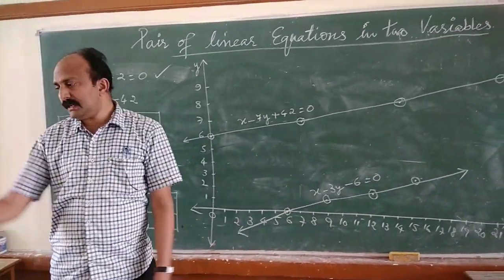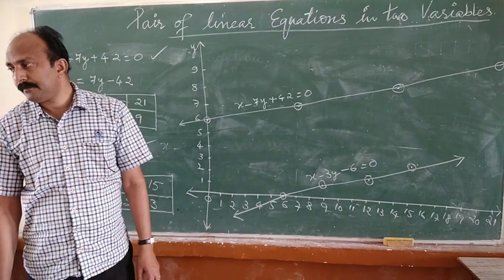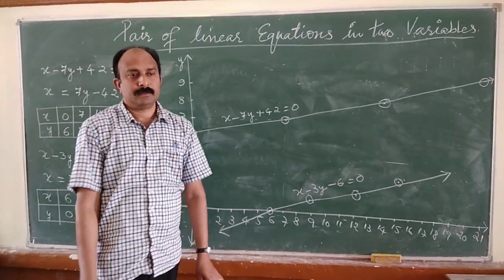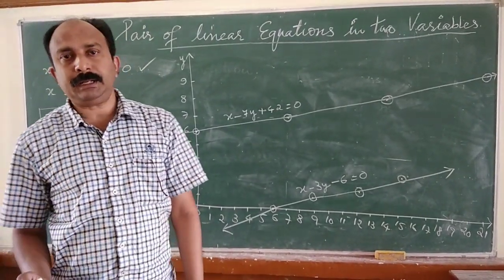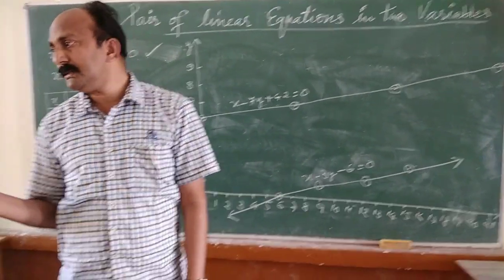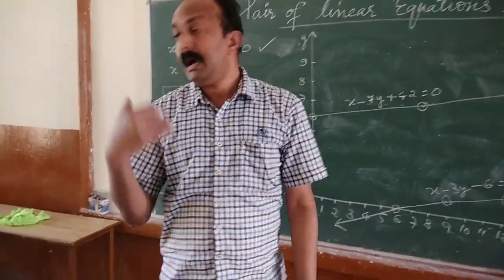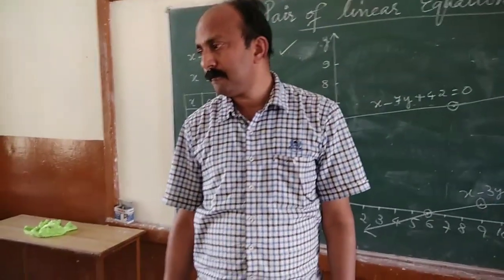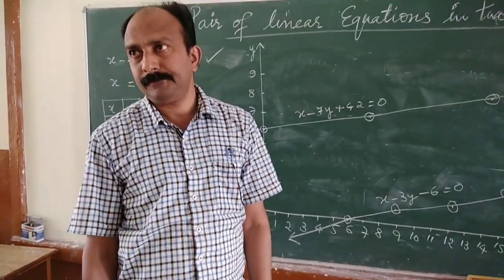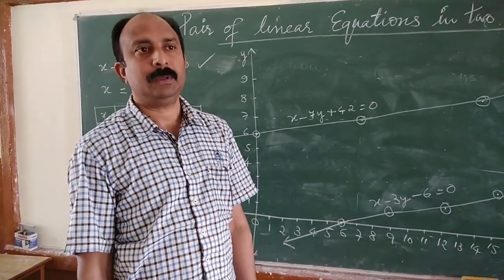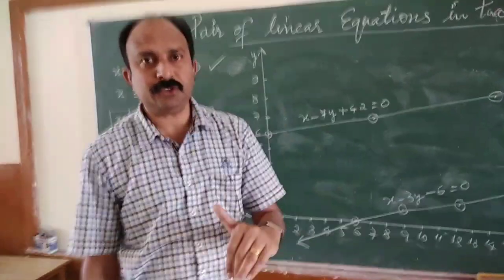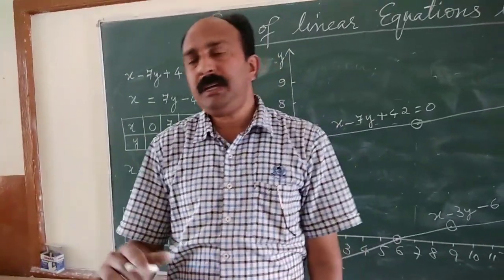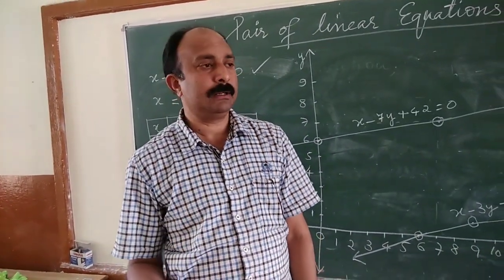Now let's see the second question. The coach of a cricket team buys 3 bats and 6 balls for 3,900 rupees. Later, she buys 1 bat and 3 balls for 1,300 rupees. Represent this situation algebraically and graphically.